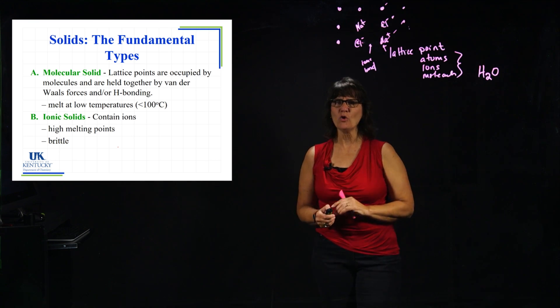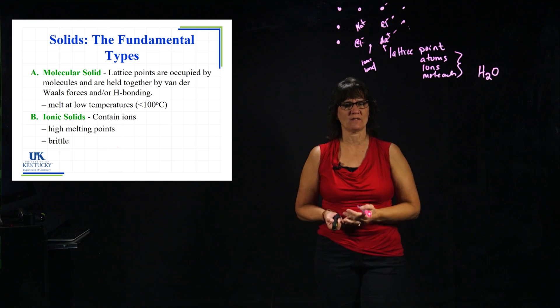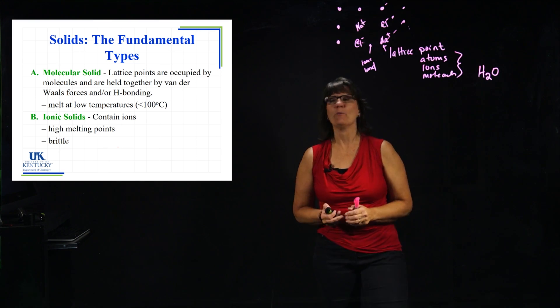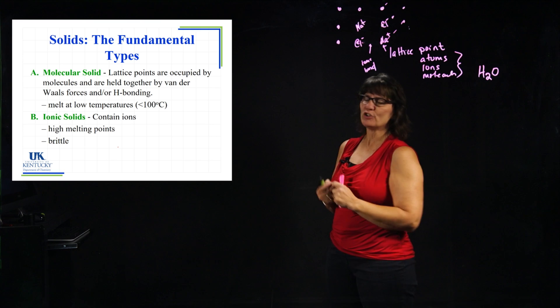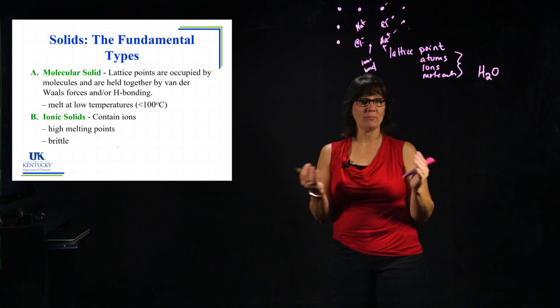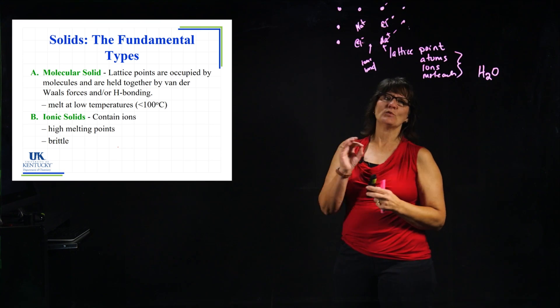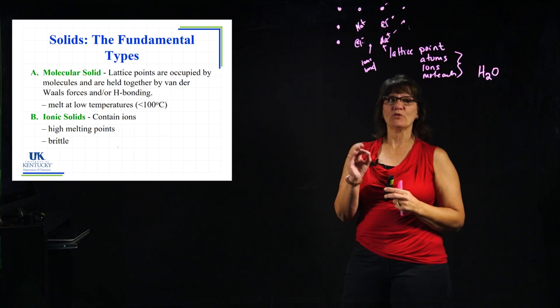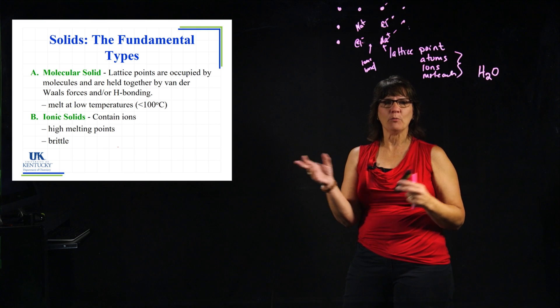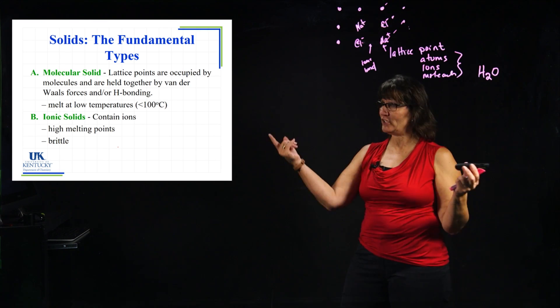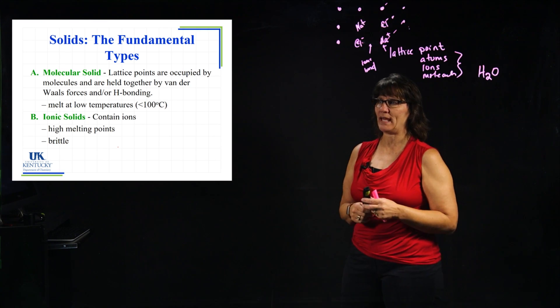If we are given descriptions of a substance and we only have molecular and ionic to divide between, we can say this one melts low — molecular — and this one melts high — ionic. We can easily put it into one of those two categories.